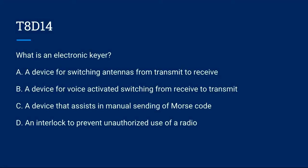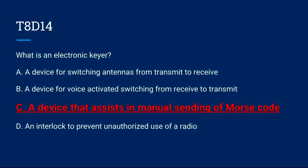T8D14: What is an electronic keyer? A. A device for switching antennas from transmit to receive. B. A device for voice-activated switching from receive to transmit. C. A device that assists in manual sending of Morse code. Or D. An interlock to prevent unauthorized use of a radio. The correct answer is C: a device that assists in manual sending of Morse code.